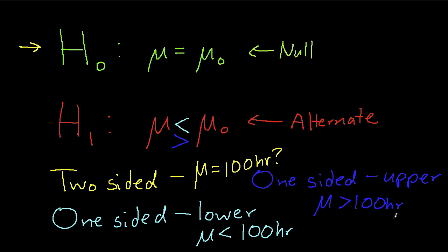But details about how we actually determine whether or not to reject the null hypothesis will depend on whether it's a two-sided, a one-sided lower, or a one-sided upper test.